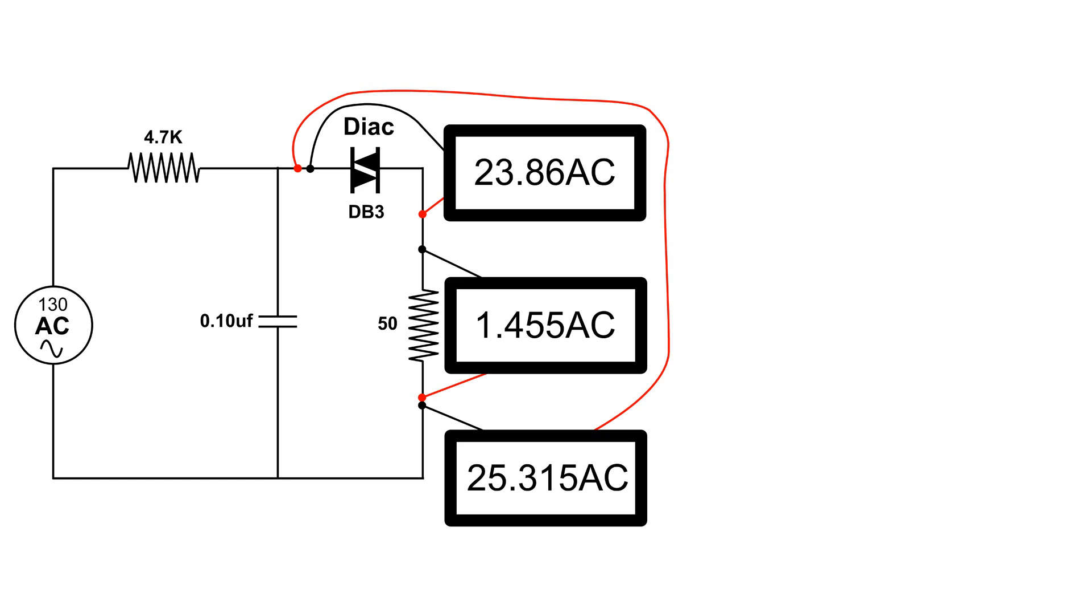Across the DIAC, the DB3, I have a little bit over 23 volts. Then across the 50 ohm load, I have a little bit more than 1.4 volts.